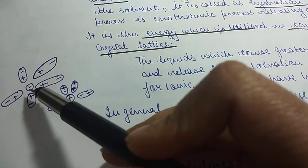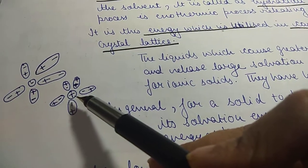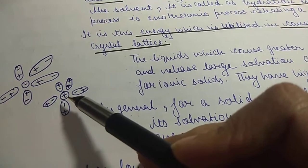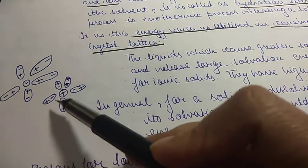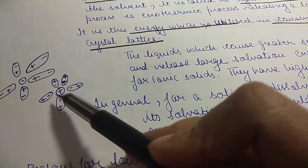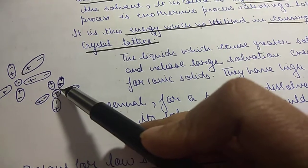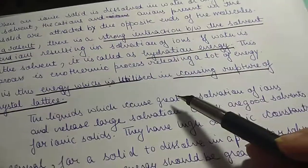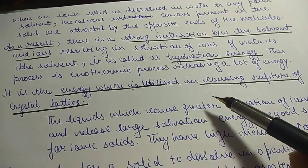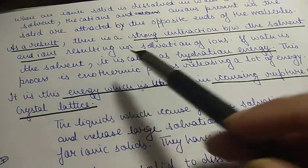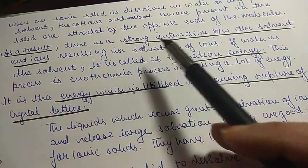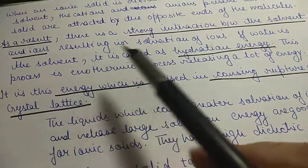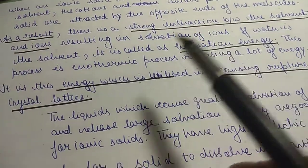Similarly, the positive cation of the ionic solid is surrounded by the negative end of the water dipole. When this kind of interaction exists, there is strong interaction between the solvent and ions resulting in solvation of ions.